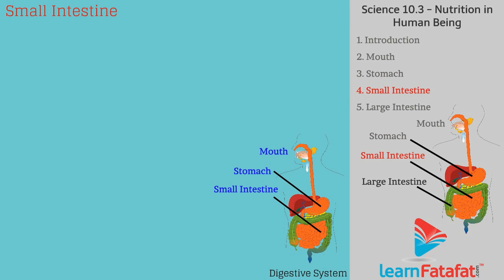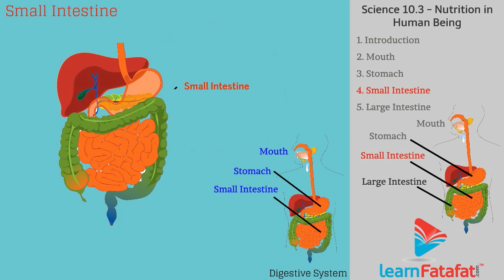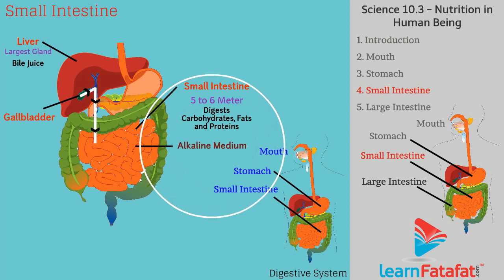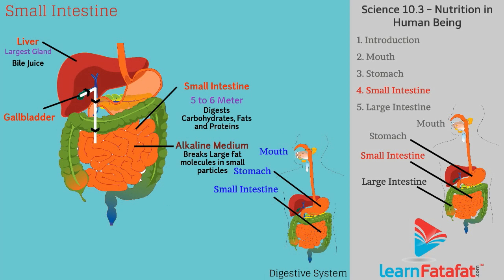The small intestine is a long coil-like structure placed compactly in the belly, with an average length of about 5 to 6 meters. Carbohydrates, fats, and proteins are fully digested in the small intestine. The largest gland, the liver, secretes bile juice which is stored in the gallbladder. The gallbladder secretes bile juice into the small intestine, which creates an alkaline medium and also breaks large fat molecules into smaller ones so that enzymes can act on them more easily.